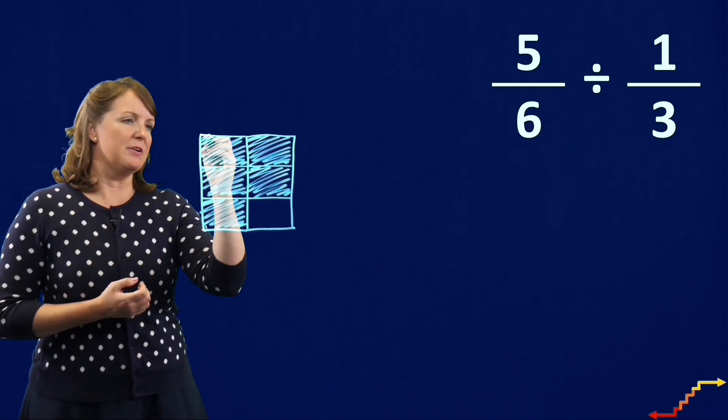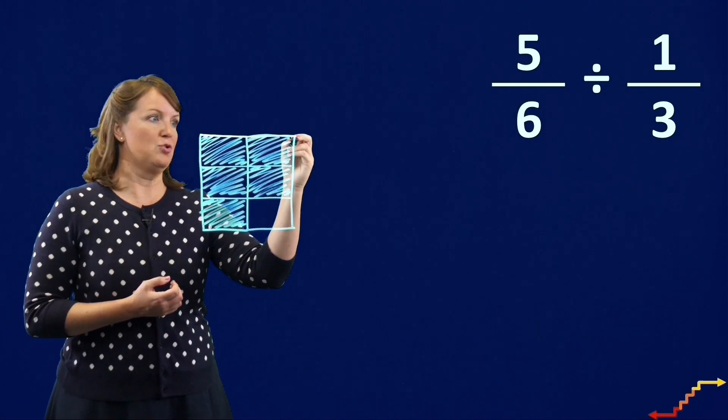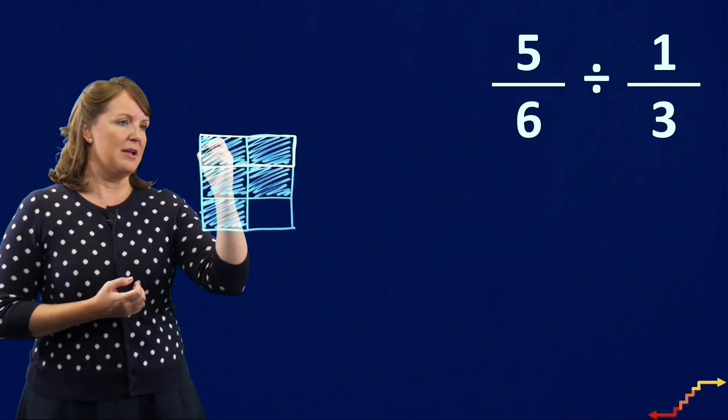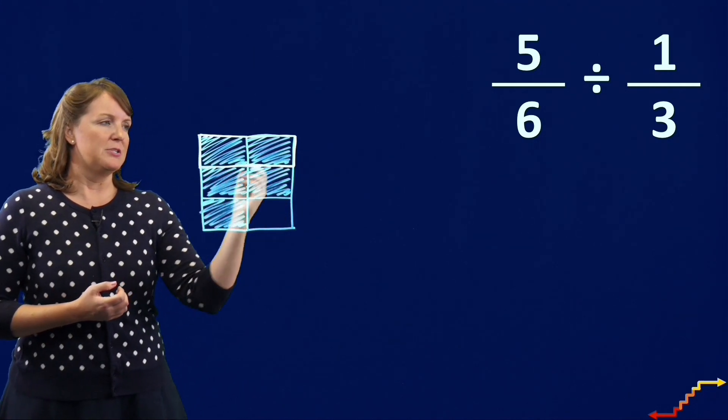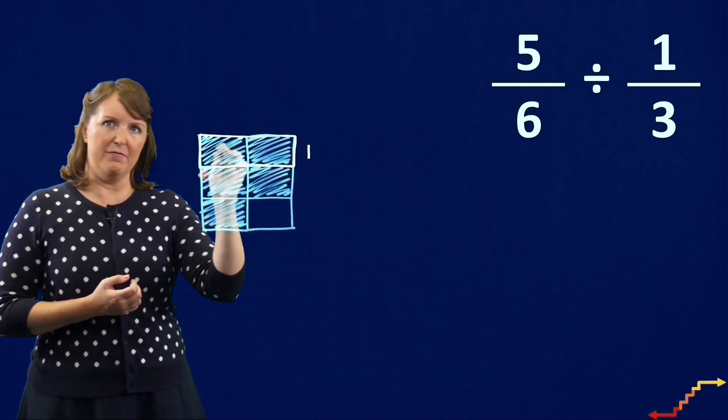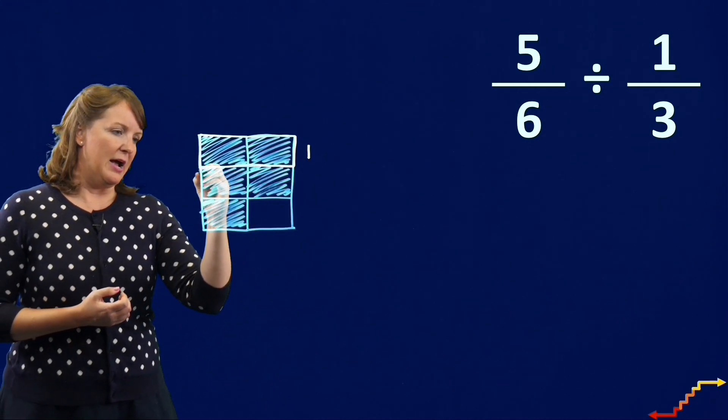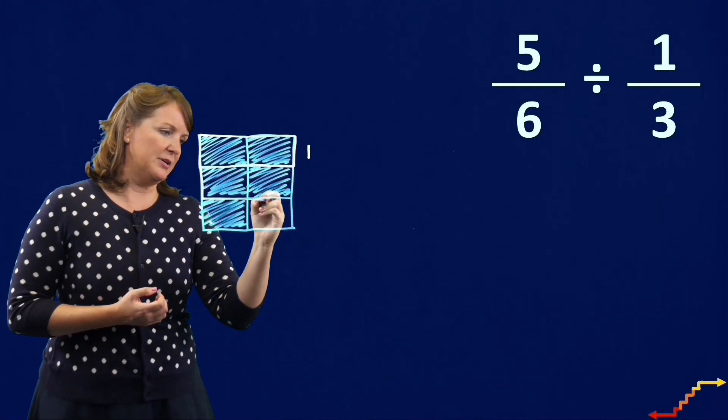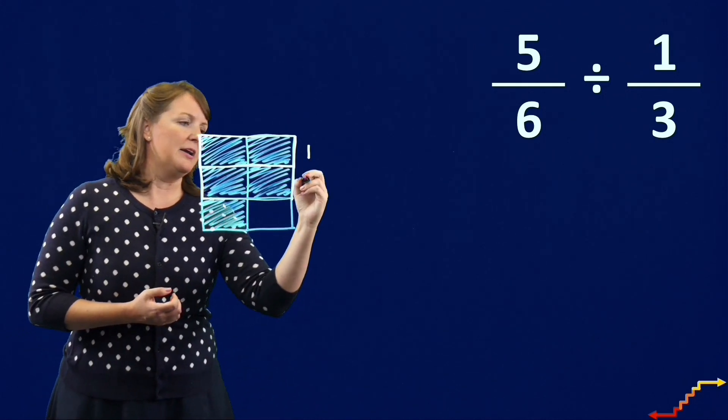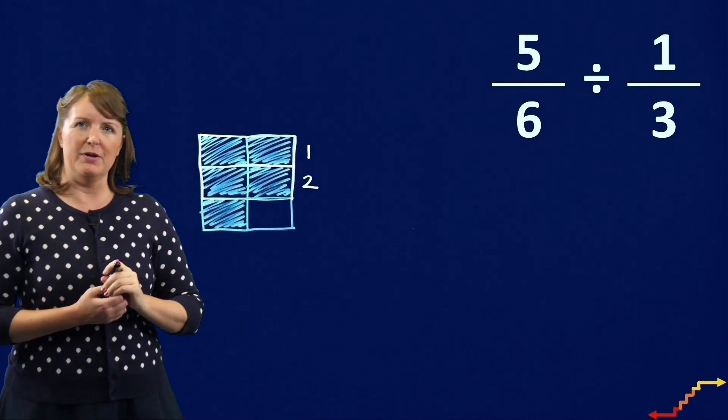So I'm going to take a different colored marker and I'm going to ring a one-third group. So I can make one full group of one-third. I can do that again. Here's a group of one-third, my pink marker. I can make a second group of one-third.